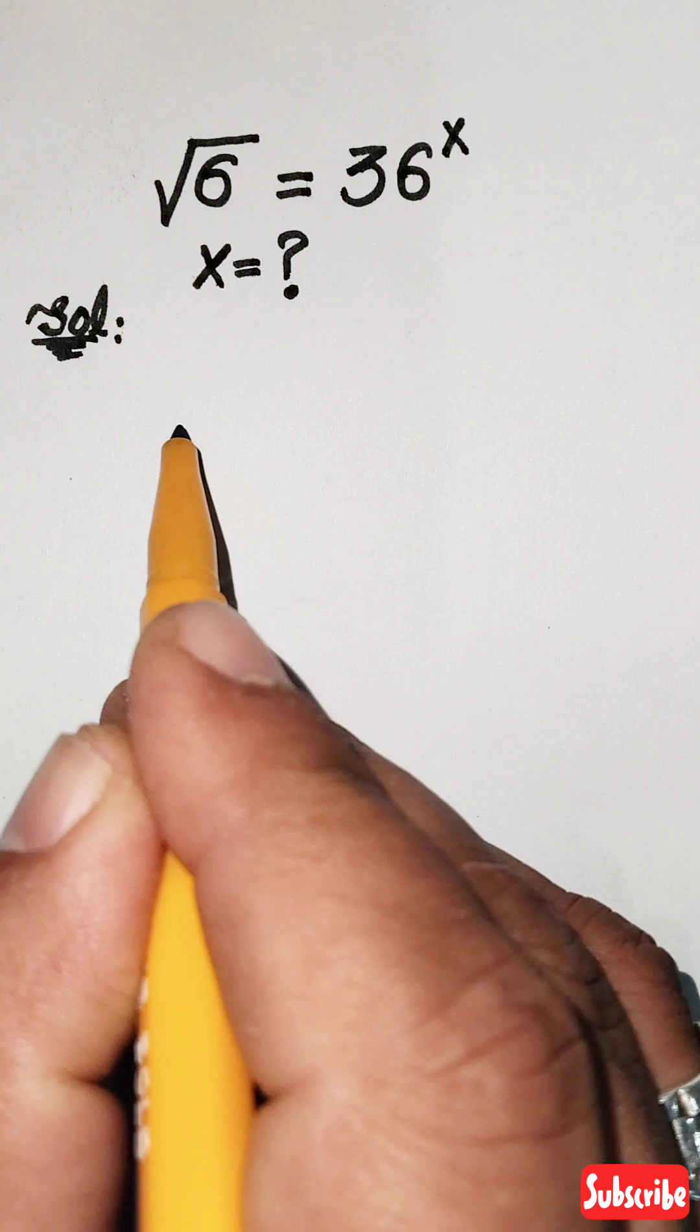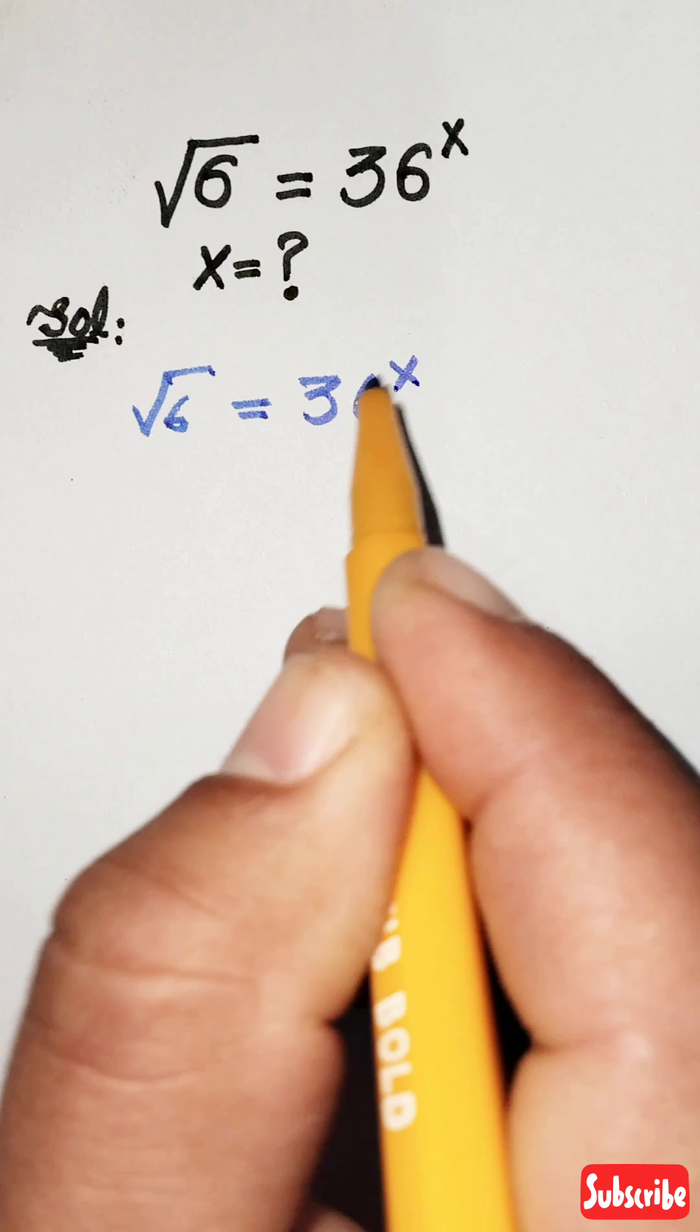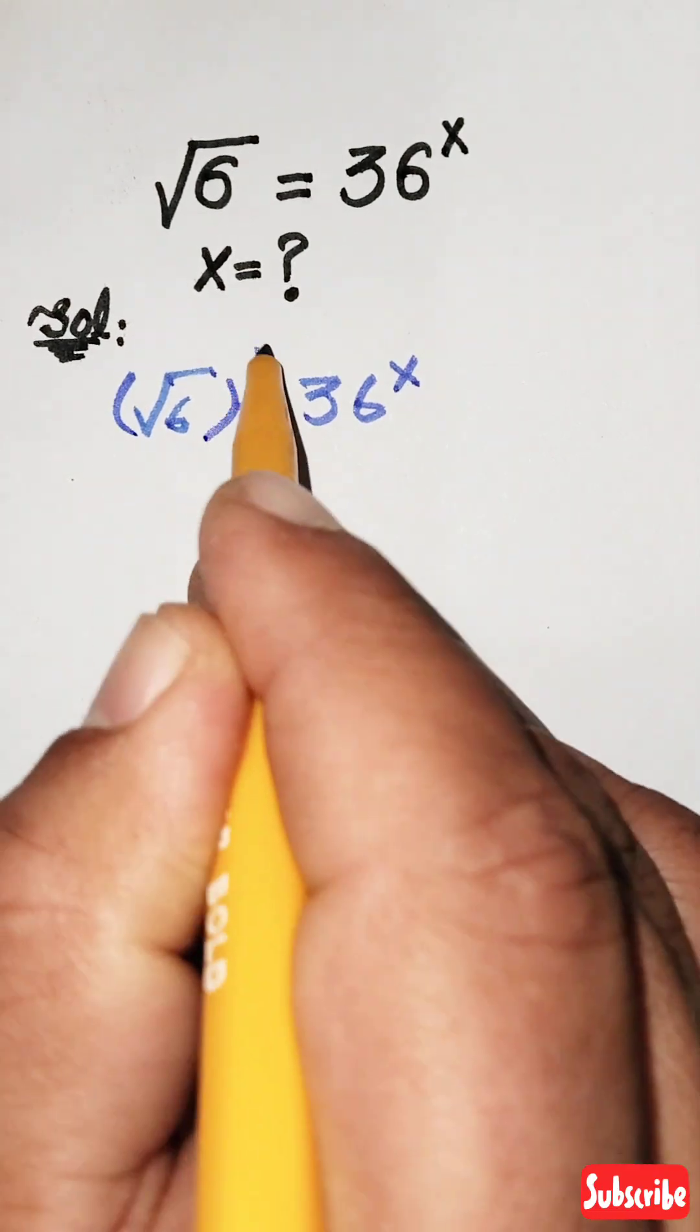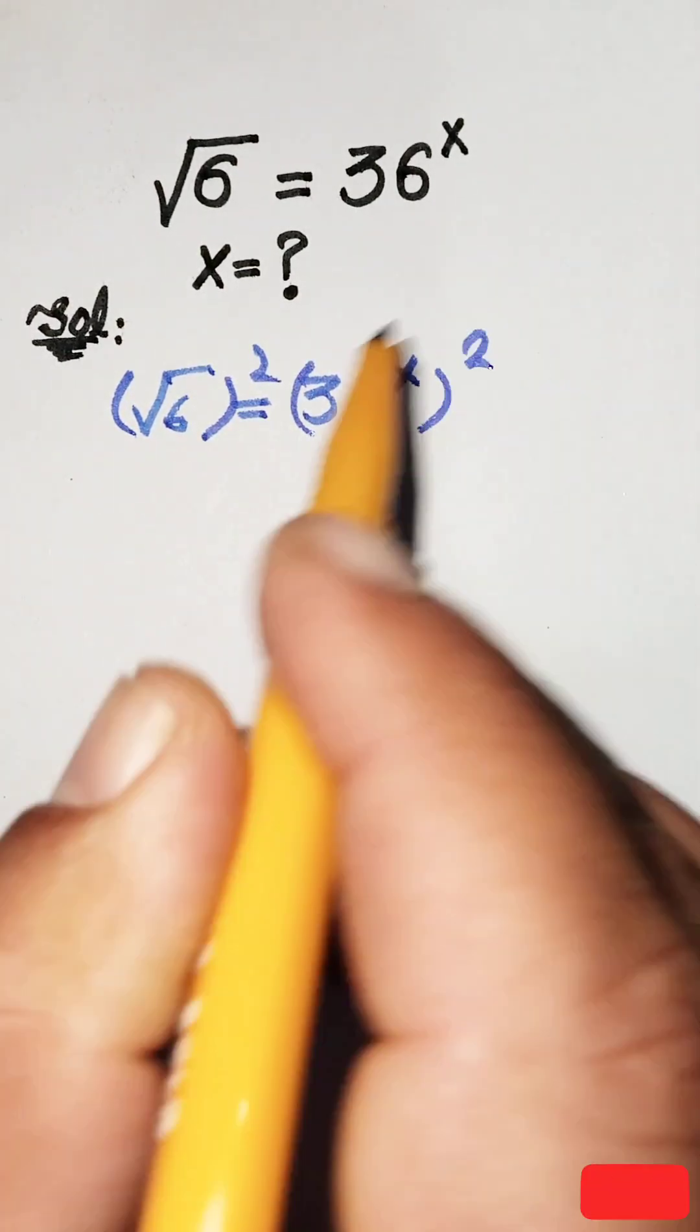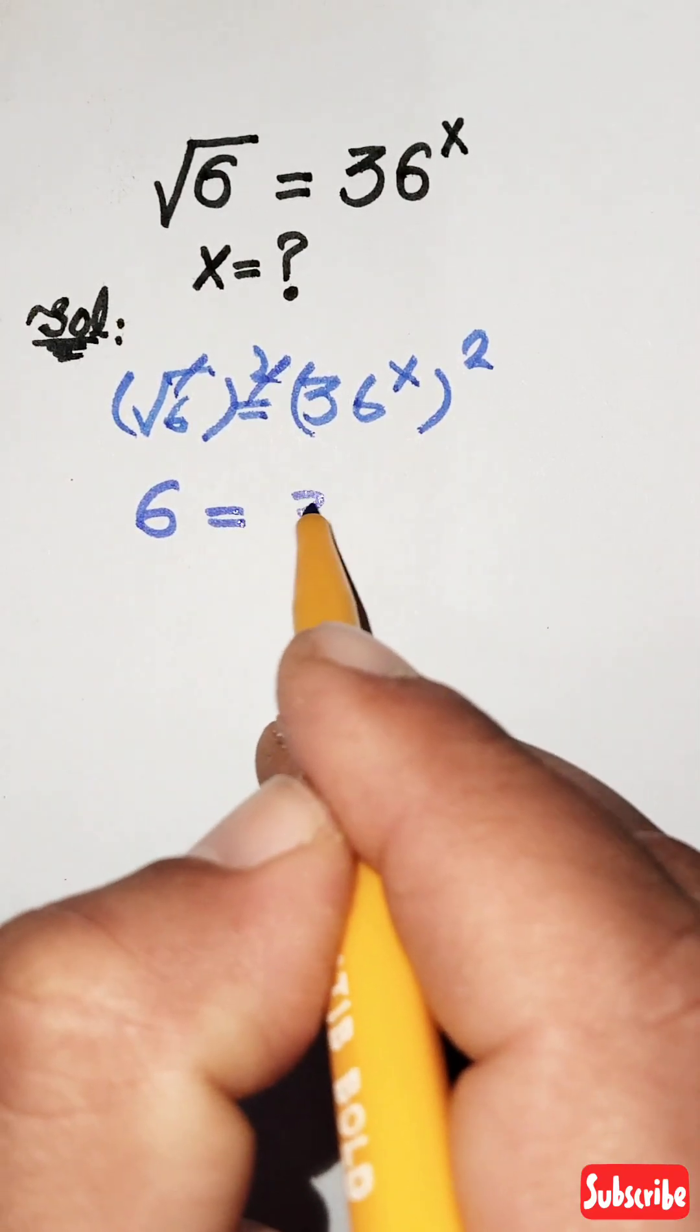So taking the square at both sides, square root of 6 squared equals 36 to the power x squared. The square cancels with the square root, and we get 6 equals 36 to the power 2x.